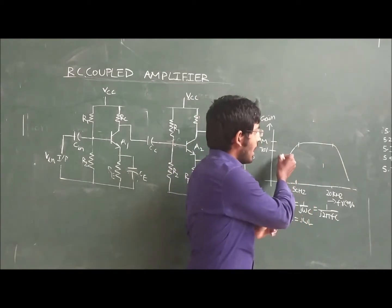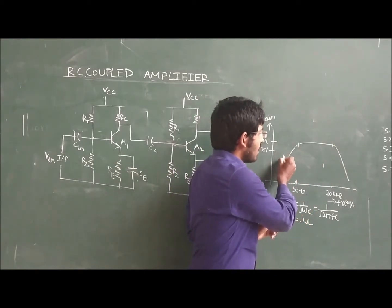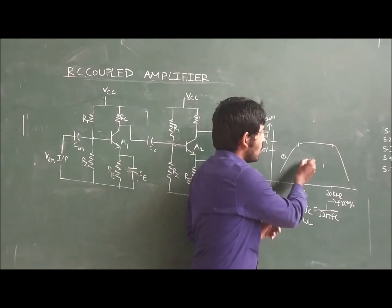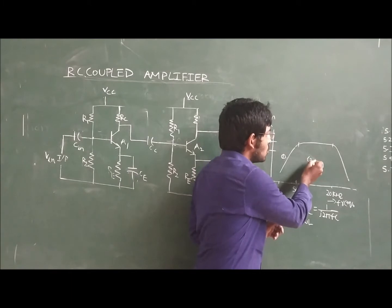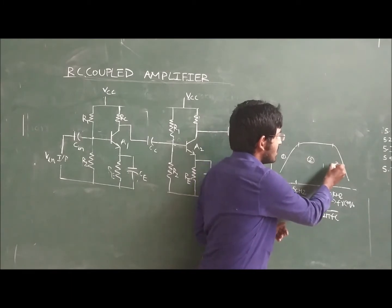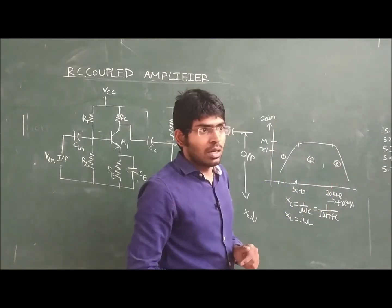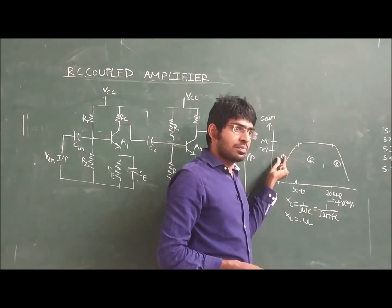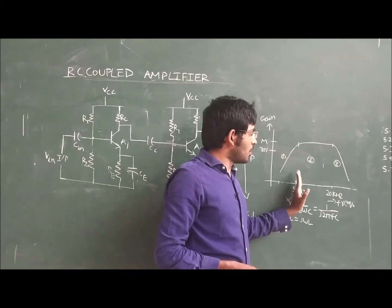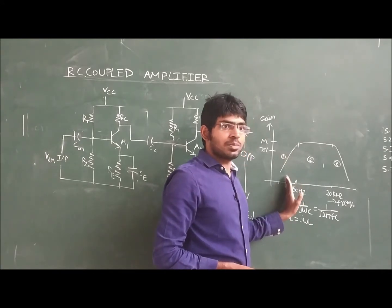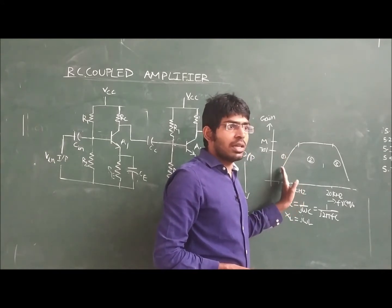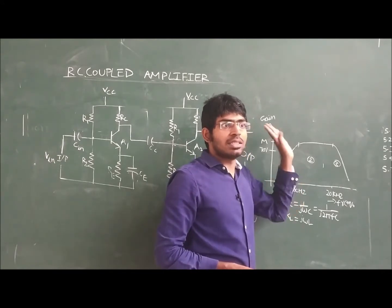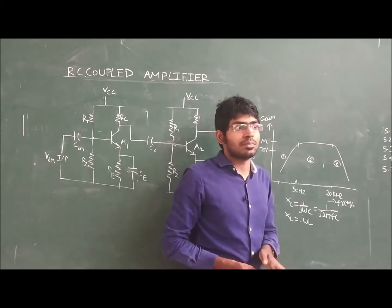I am labeling the regions: this as 1, this as 2, and this as 3. First, we are discussing Region 1, below 50 Hz — why the gain is increasing.